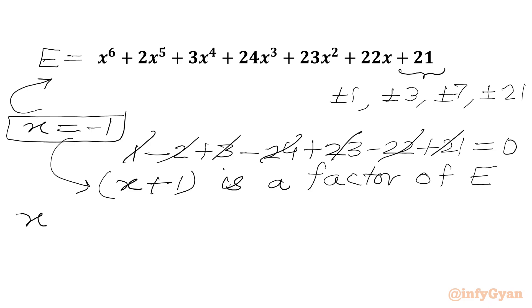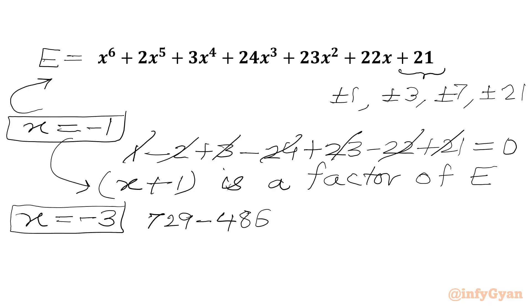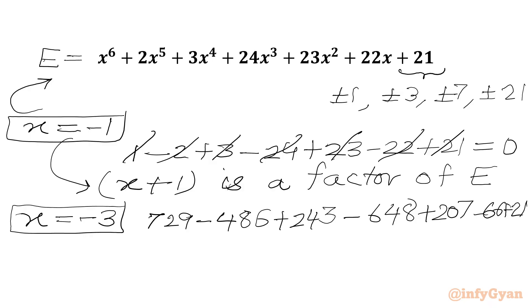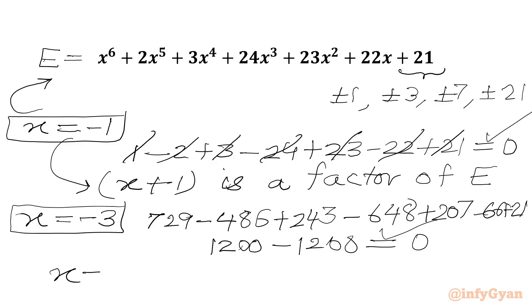Now we have to verify the second negative value, x equals minus 3. Minus 3 to the power 6 is 729. 2 times minus 3 to the power 5 gives minus 486. 3 times minus 3 to the power 4 gives 243. 24 times minus 3 cubed gives minus 648. Then we write 207, minus 66, and plus 21. Adding all positive numbers gives 1200, and all negative numbers give minus 1200. So again this is satisfying — we will write x plus 3 is another factor of expression e.